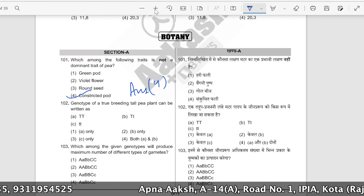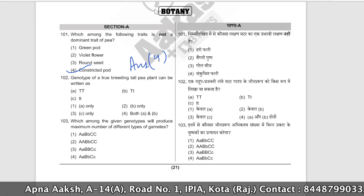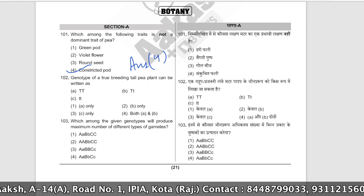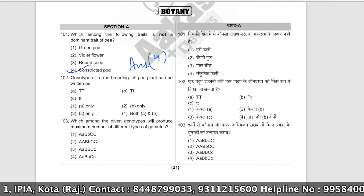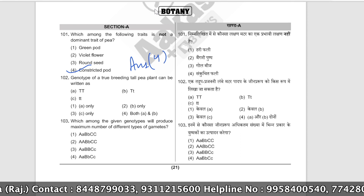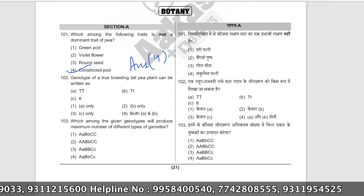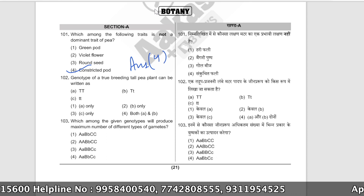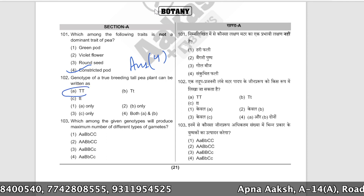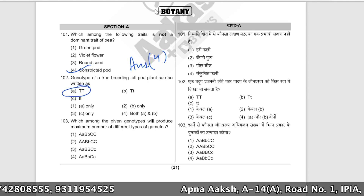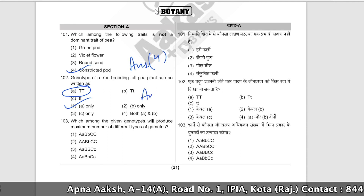Next: the genotype of a true breeding tall pea plant can be written as? Keep in mind it must be true breeding. So it can only be when both alleles are capital T — that is homozygous dominant (TT). The correct answer is option number one, that is 'A only.'